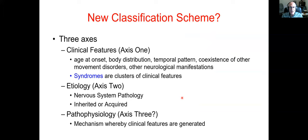In recent years, I've actually thought that there should be a third axis — axis three. I haven't published this idea yet, but I've been talking about it. I think it's important because it adds another feature: that is the mechanism whereby clinical features are generated. Etiology is a somewhat different type of explanation for disease.